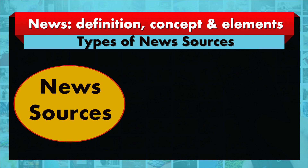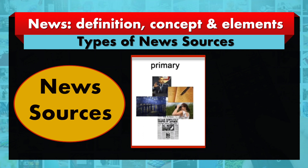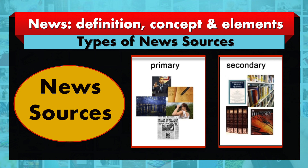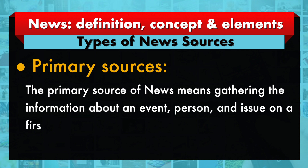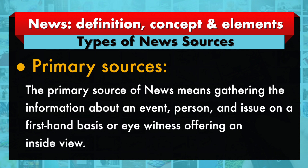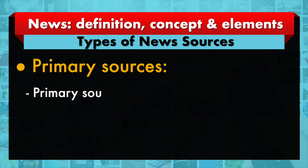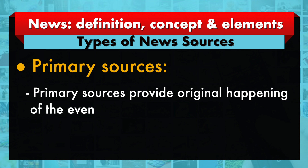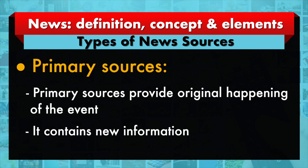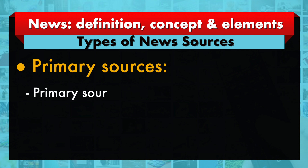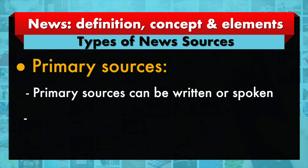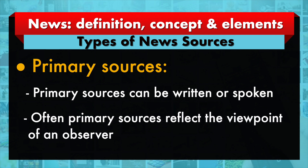News sources are broadly categorized into primary and secondary sources. Primary sources of news mean gathering information about an event, person, or issue on a first-hand basis or eyewitness basis, offering an inside view. It is essential to understand that primary sources provide the original happening of an event and contain new information. Primary sources can be written or spoken, and often they reflect the viewpoint of an observer.